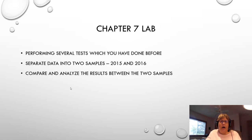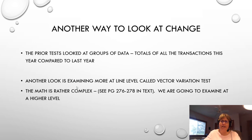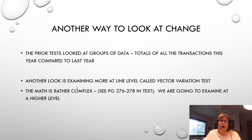I want to talk a little about Chapter 10, which I did not have you read. If you take a peek at pages 276 and 278, you'll see why we didn't get into it — the math is actually rather complex. But I want to go over the basics of what we're calling a vector variation test, also referred to by different names. It looks at groups of data at a more line-by-line level.